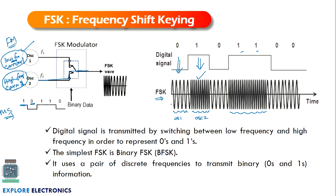In FSK we vary the frequency of the carrier wave according to the digital message signal. The simplest form of FSK is BFSK — binary frequency shift keying — which uses a pair of discrete frequencies to transmit binary zeros and ones.